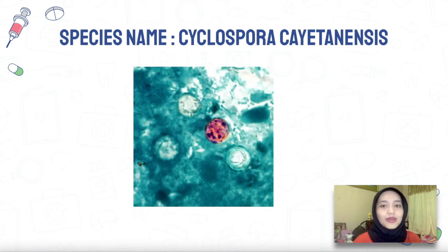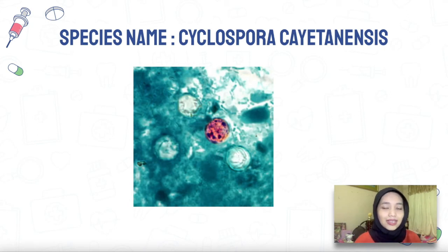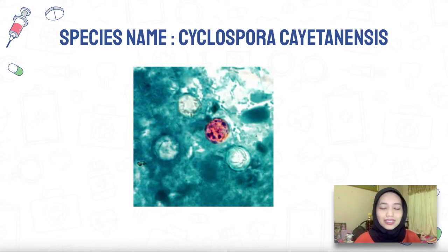I will proceed with the next organism, known as Cyclospora cayetanensis. Cyclospora cayetanensis is a coccidian parasite that has been recognized as an emergent pathogen causing protracted diarrhea in humans. The first reported cases occurred during the late 1970s, with the region classified as an endemic region. Since then, Cyclospora has been known as a cause of traveler's diarrhea and was originally described as a novel pathogen of probable coccidian nature in the 1980s, then fully characterized in the 1990s.